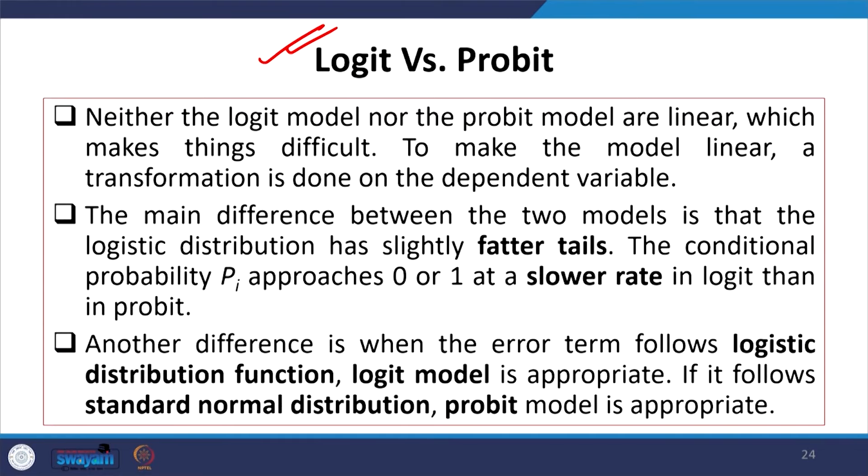The logistic distribution has fatter tails, whereas probit has less fat tails. Another difference is when the error term follows the logistic distribution function, logit is more appropriate. Whereas when the error distribution is normal — that is, the cumulative density function is normal — then probit is most appropriate. These two points are quite important.